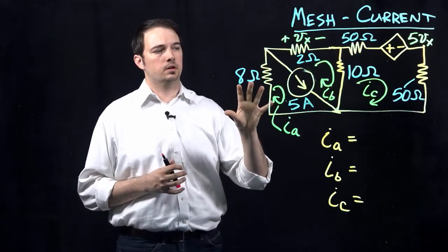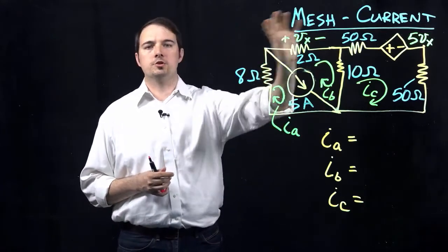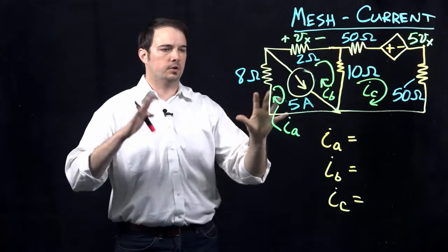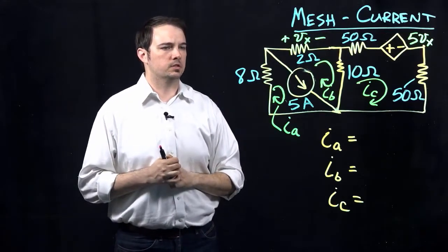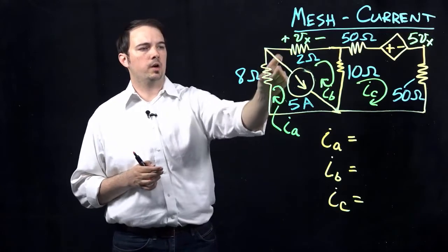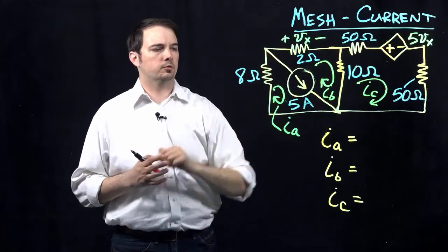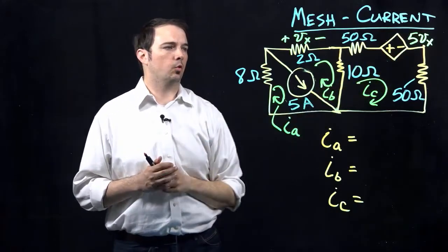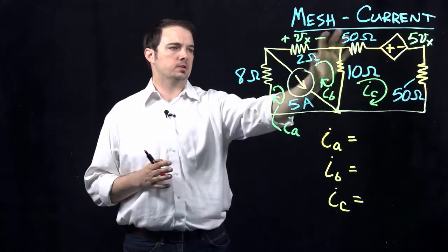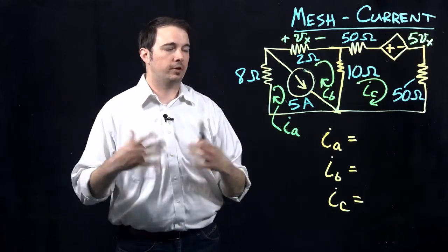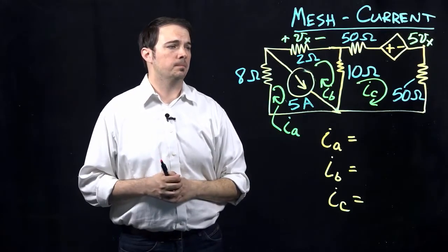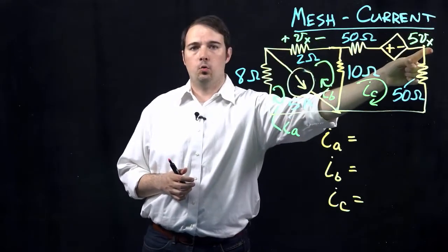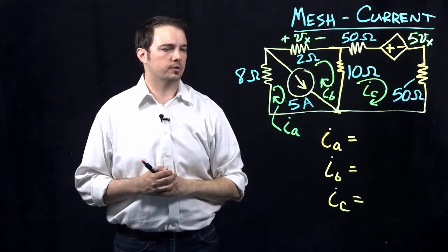This problem specifically is a work through of the mesh current analysis that we've talked about and has various different elements. We have some resistors, a current source coming diagonally through the schematic, and a dependent voltage source up here in the corner.